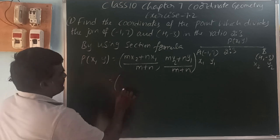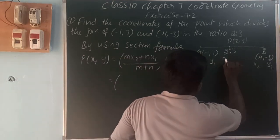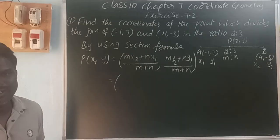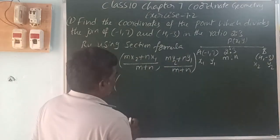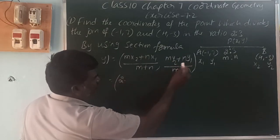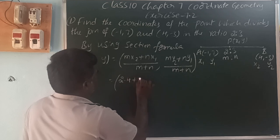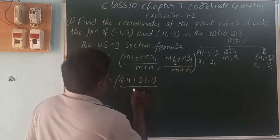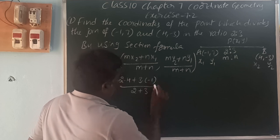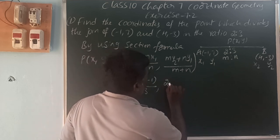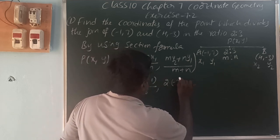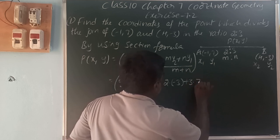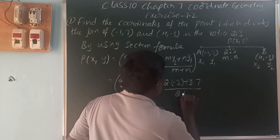P(x, y) equals mx2 plus nx1 by m plus n, and my2 plus ny1 by m plus n. Here m is to n is 2 is to 3, so m is 2 and n is 3. Substituting: 2 into x2 which is 4, plus 3 into x1 which is minus 1, divided by 2 plus 3. Next, 2 into y2 which is minus 3, plus 3 into y1 which is 7, divided by 2 plus 3.